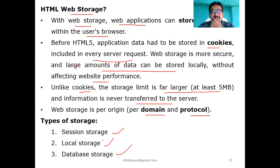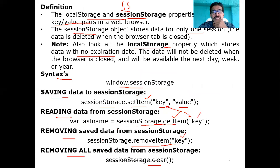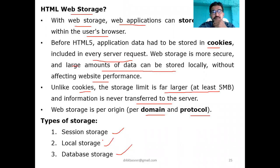So what we have discussed: web storage is for storing web application data, consisting of three types - session storage, local storage, and database storage. Examples for local storage will be seen in the next part. That's about web storage and client-side storage.